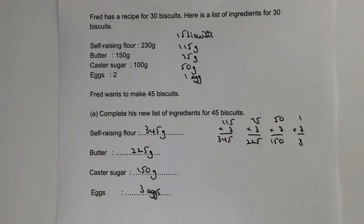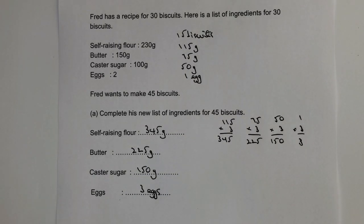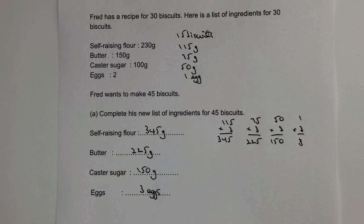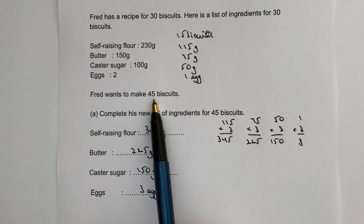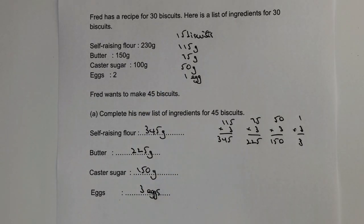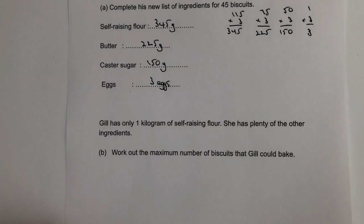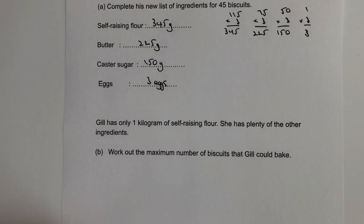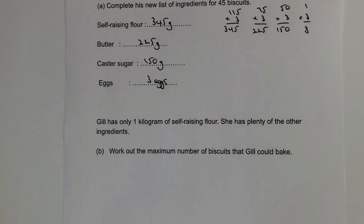The way I've multiplied might be different to how you do it, but essentially that's the whole idea. These questions usually offer a harder way — working out ingredients per biscuit then multiplying through — or an easier connection between 30 and 45. Unfortunately, the same can't be said for the second part of the question: Jill has one kilogram of self-raising flour and plenty of other ingredients. Work out the maximum number of biscuits Jill could bake.